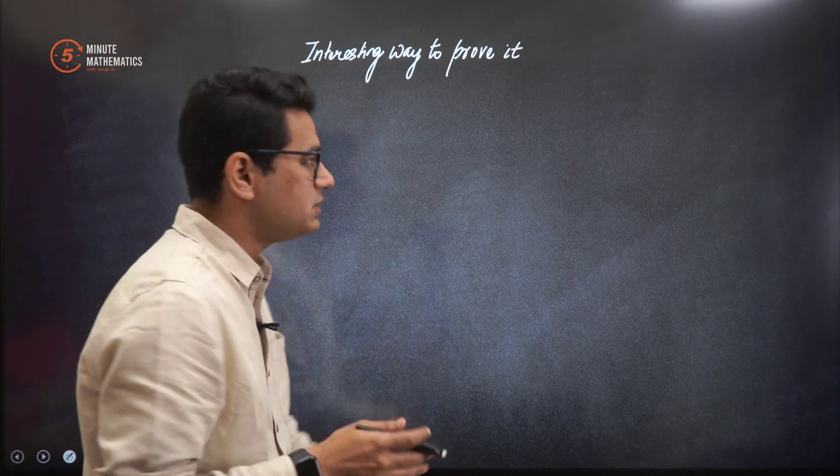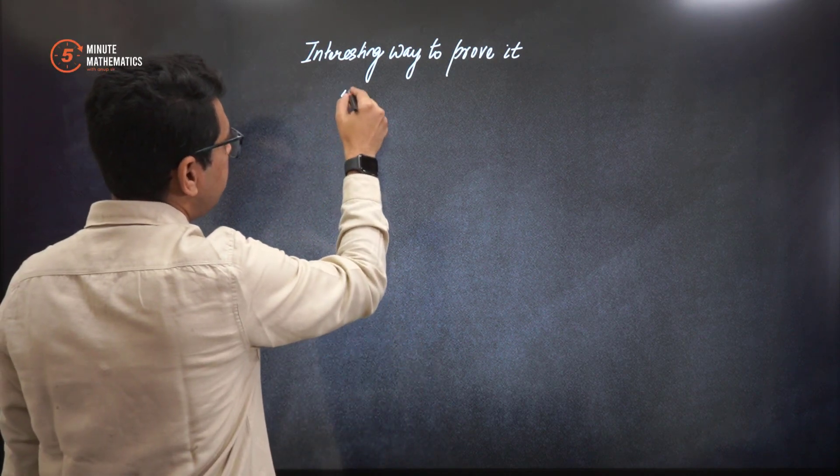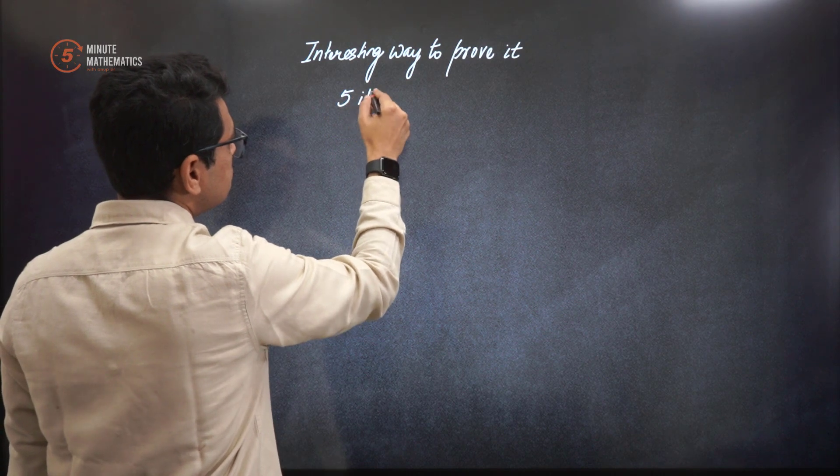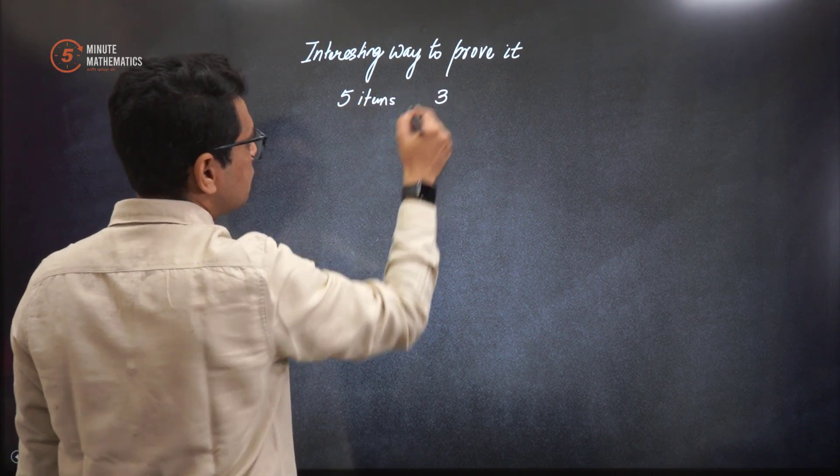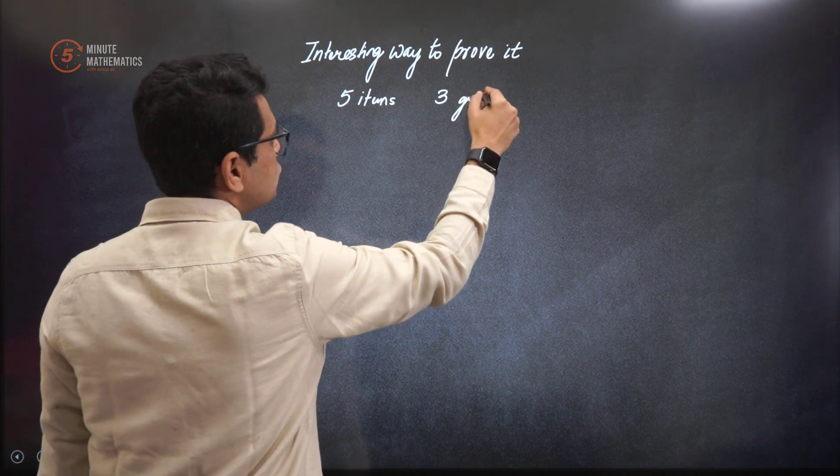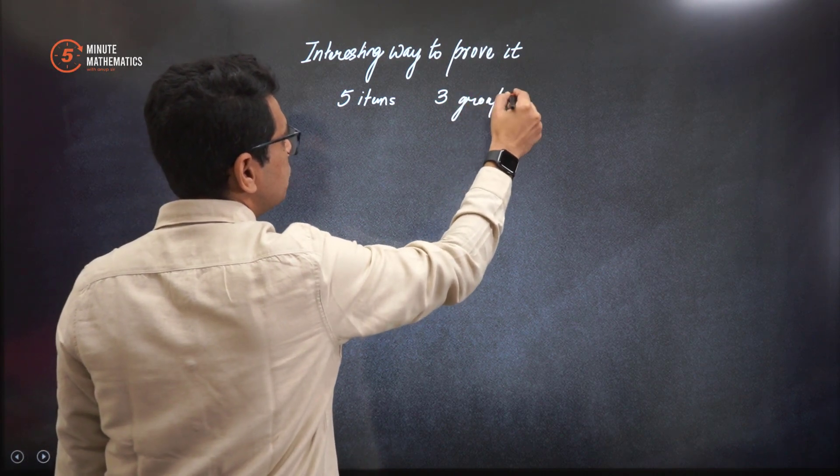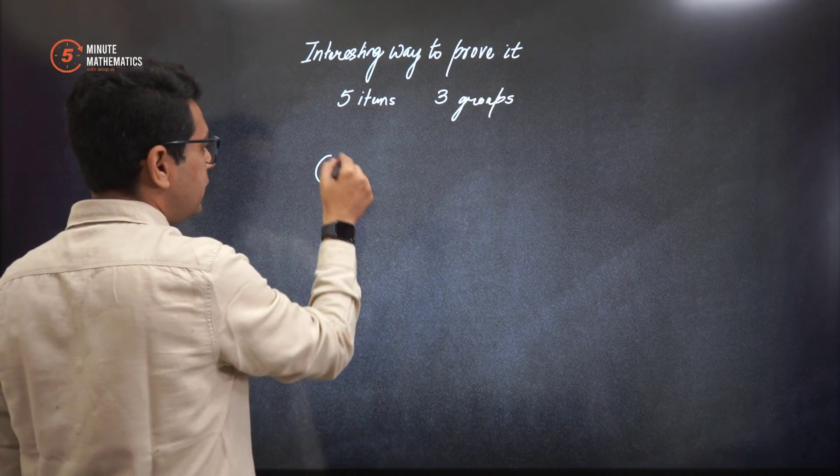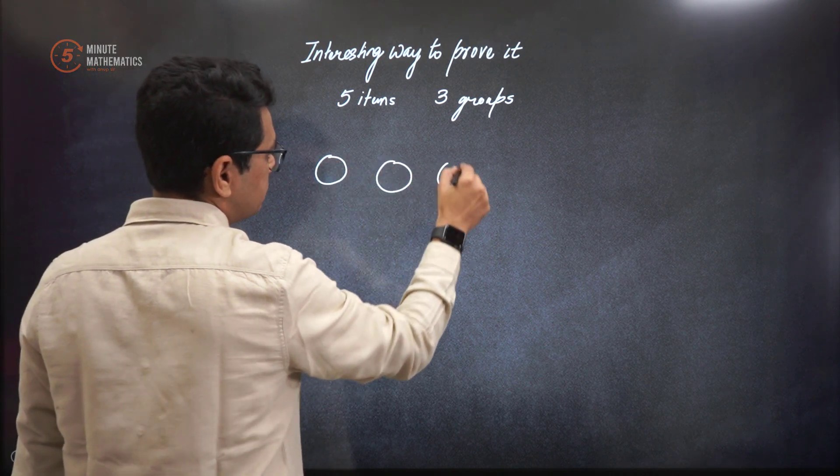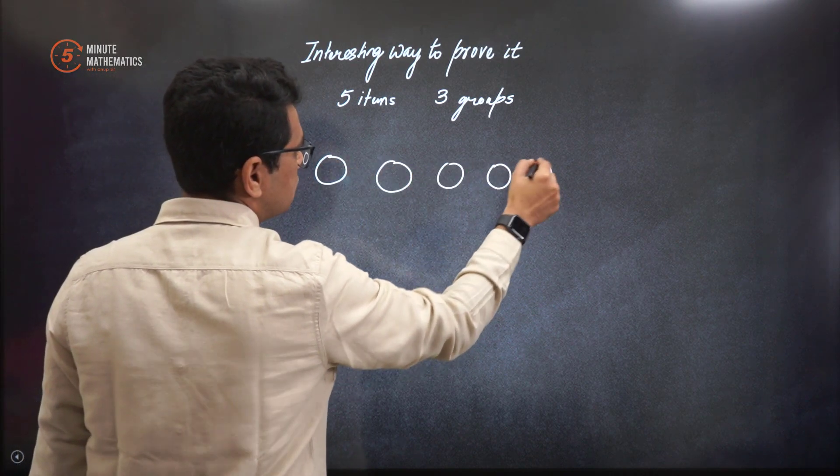Let's take small pieces. Let's say we have 5 items and we want to distribute them in 3 people, 3 groups. So how is the arrangement done? Please listen to this very carefully. For 5 items, I draw circles. That is 5 circles, right?